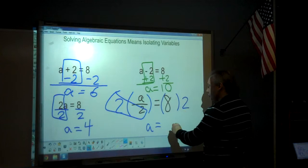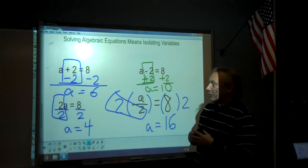Times 2 and divided by 2 cancel out, so that leaves us with the a alone. And 8 times 2 is equal to 16. And that is how we isolate a variable.